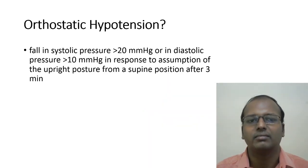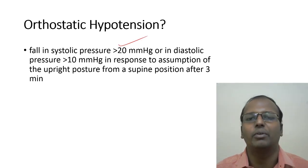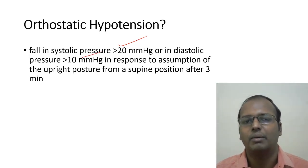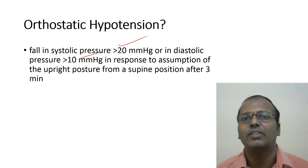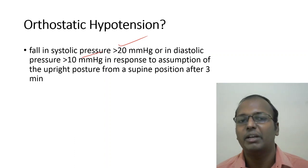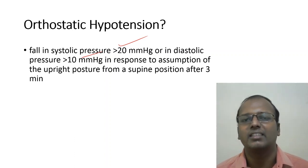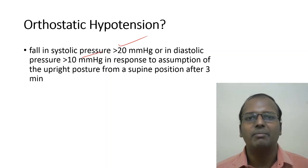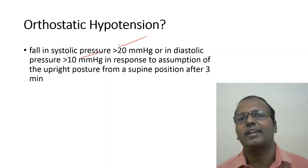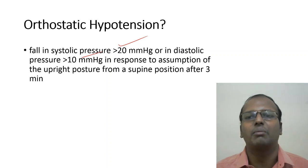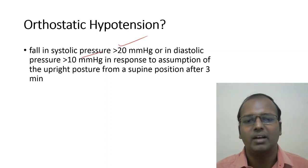Orthostatic hypotension: fall in systolic BP of more than 20 mmHg or diastolic BP of more than 10 mmHg upon assumption of upright posture from supine. After the patient stands up, if the BP fall exceeds these values and persists beyond three minutes, it is abnormal. In normal individuals, a transient fall occurs but BP normalizes within three minutes as heart rate and vascular resistance compensate.